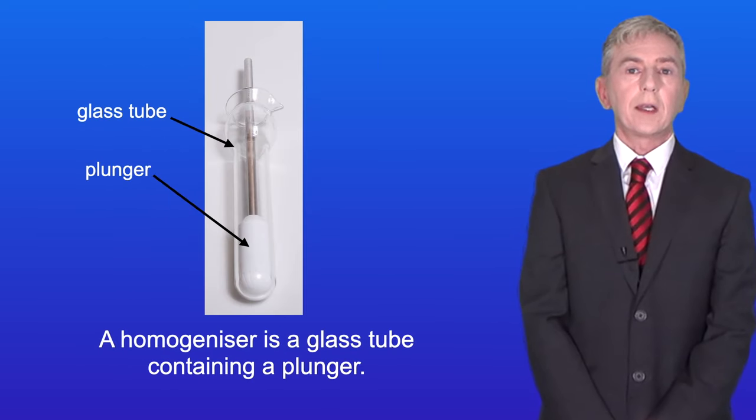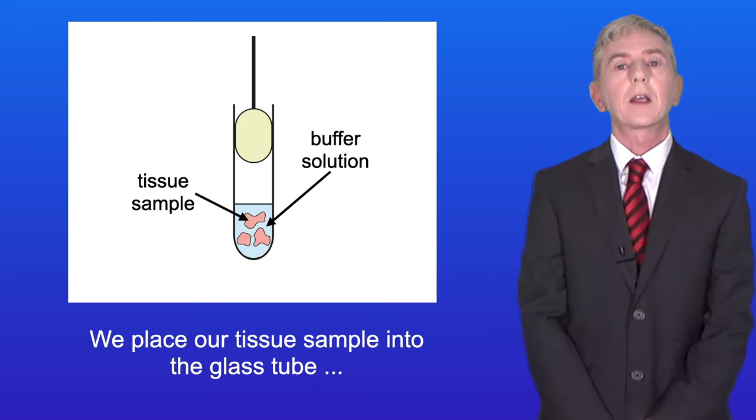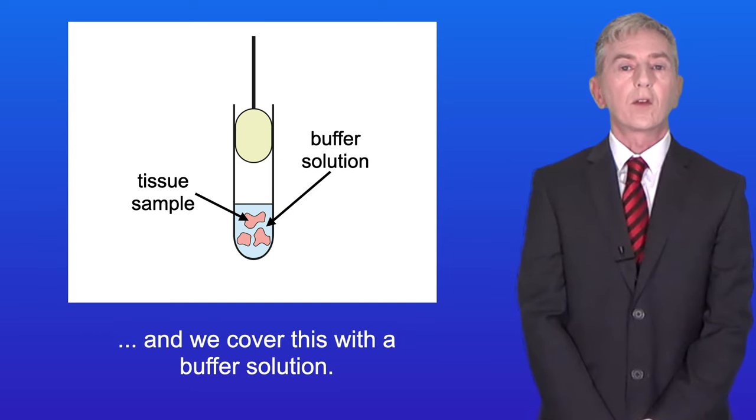A homogenizer is a glass tube containing a plunger. We place our tissue sample into the glass tube and we cover this with a buffer solution.